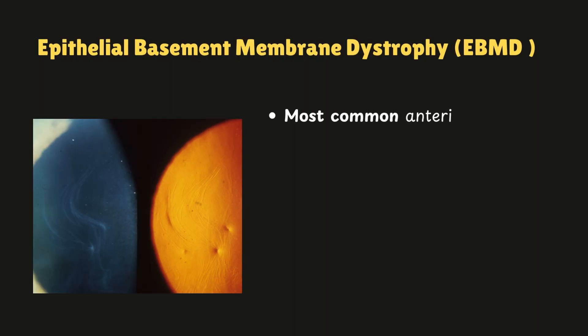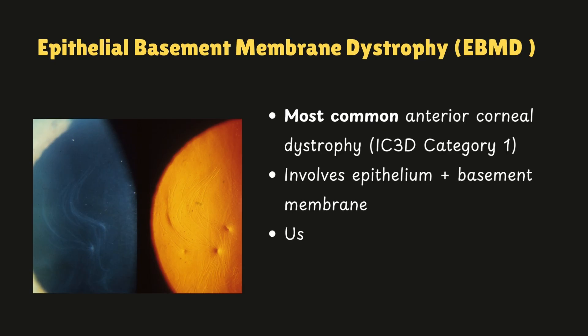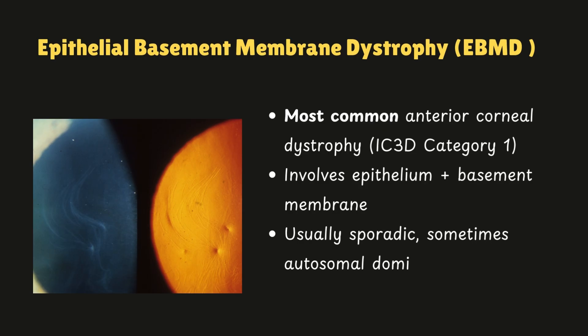Some high yield facts to remember about Cogan's dystrophy: number one, it is the most common anterior corneal dystrophy — commonly asked in exams. Most cases are sporadic, but there are some autosomal dominant familial forms as well, making this an exception to the usual definition of dystrophy, which states that all dystrophies are hereditary. The prevalence of EBMD increases with age — about 76% of patients are above 40 to 50 years.